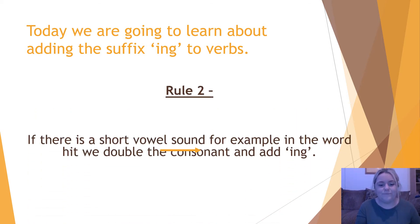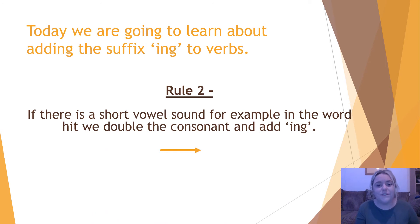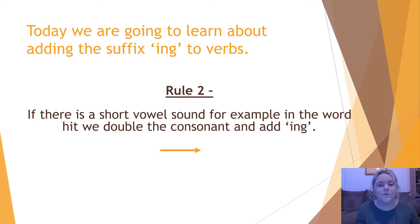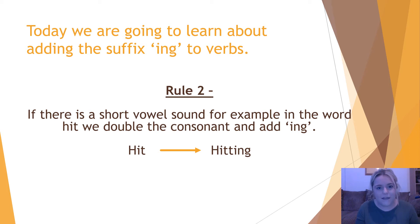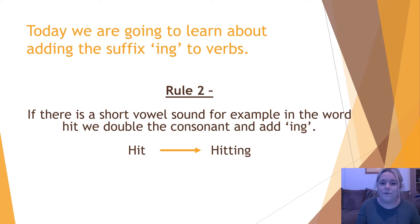Rule number two: if there is a short vowel sound — for example, in the word 'hit' — we double the consonant and add -ing. Just like past tense, we double the consonant, but now we're adding -ing, not -ed. The word 'hit' becomes 'hitting' by doubling the consonant, which is T. I am hitting the ball.